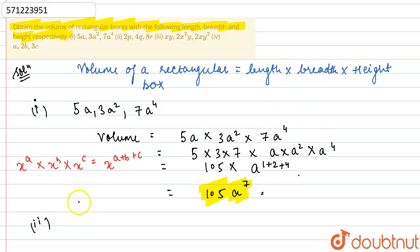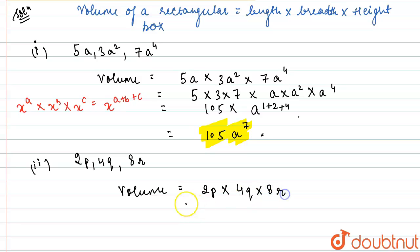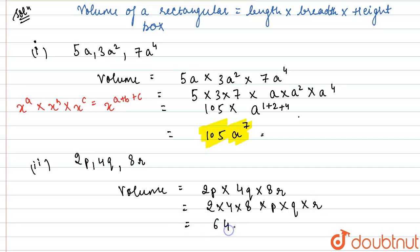The second part is: 2p, 4q, 8r. We find the volume in a similar way — length 2p multiplied by breadth 4q multiplied by height 8r. Writing the numbers together: 2 × 4 × 8, multiplied by p × q × r. 2 × 4 is 8 and 8 × 8 is 64, so the answer is 64pqr. This is the volume for the second part.